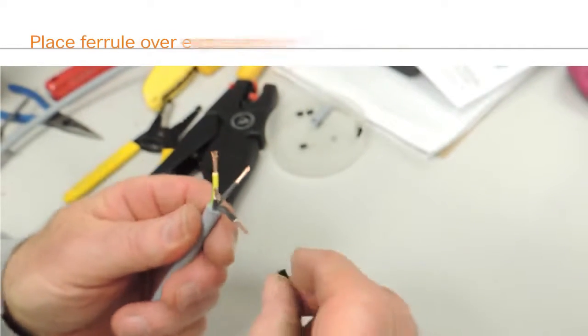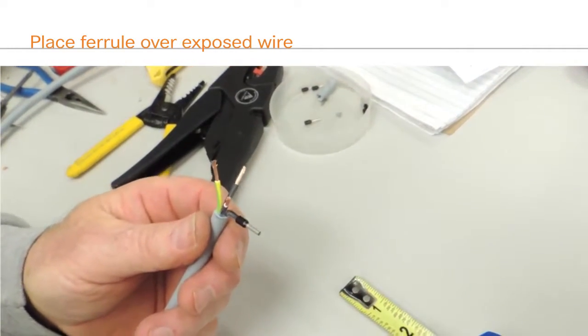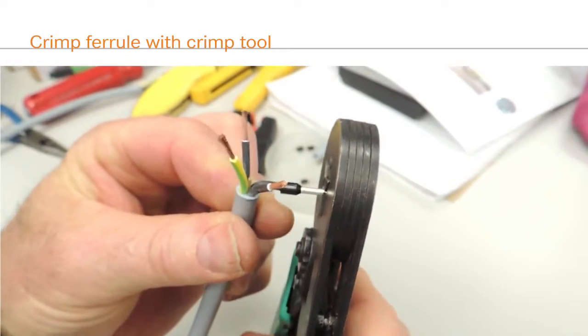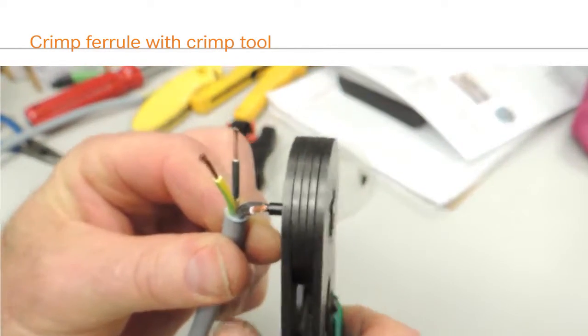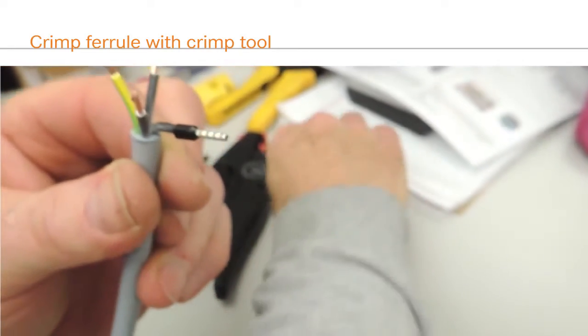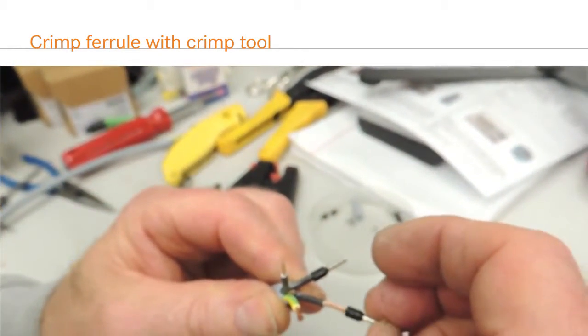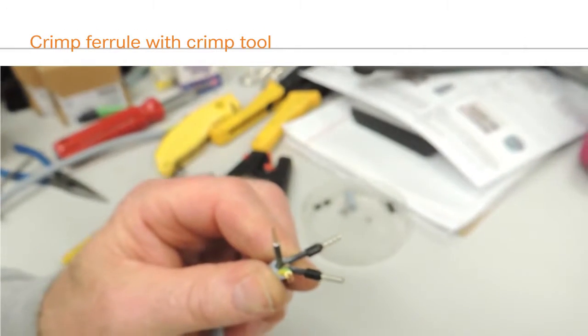To attach the ferrules, simply place the wire into the ferrule. You should be able to see the wire at the end of the ferrule. If there is not enough exposed wire in the ferrule to do this, strip the insulation back further. Now, crimp the ferrule to the wire using the crimping tool. Repeat the process with the remaining conductors.